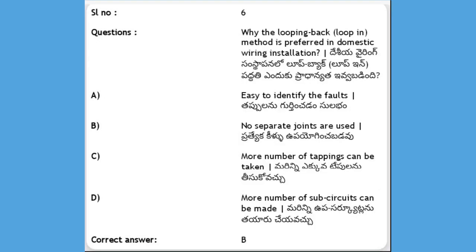The round nose plier is preferred in domestic wiring installation. The question is: what is preferred in looping back domestic wiring? Options: A) easy to identify the faults, B) no separate joints are used, C) more number of tappings can be taken, D) more number of tappings can be made. The answer is B, no separate joints are used.